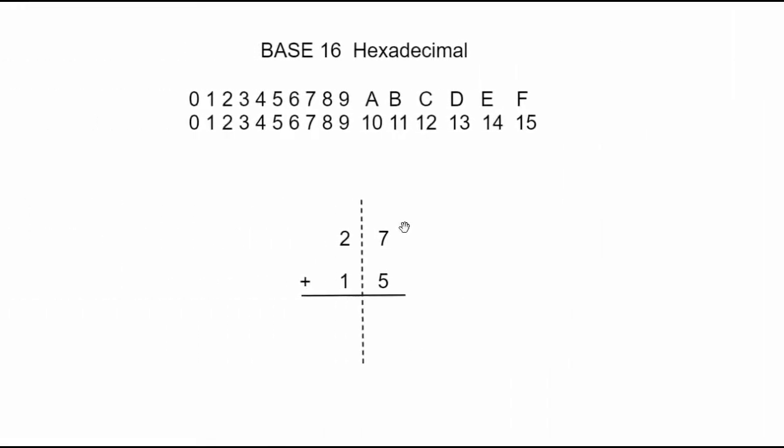Let us solve the first addition problem using hexadecimal. So we have a 7 plus a 5. We know that's a 12 and a 12 is a C. So we just come here and put C. Then a 2 plus a 1 is a 3. That's all we have to do for something simple like this. Example 1 all done.